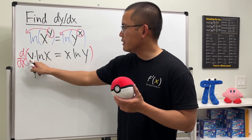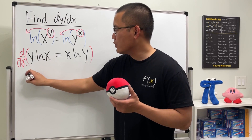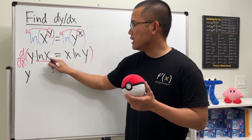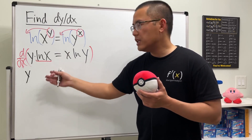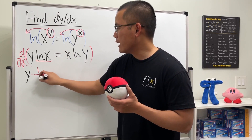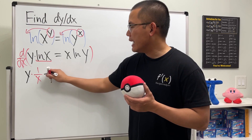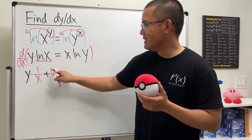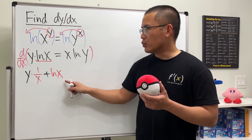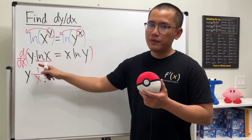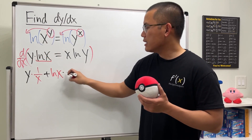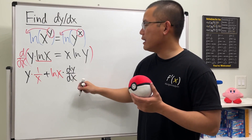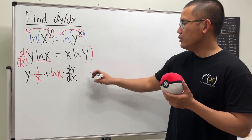The left side is a product of y and ln(x). Keep the first function, which is y, and multiply by the derivative of the second: the derivative of ln(x) is 1/x. Then add the second function, ln(x), multiplied by the derivative of the first, which is dy/dx.